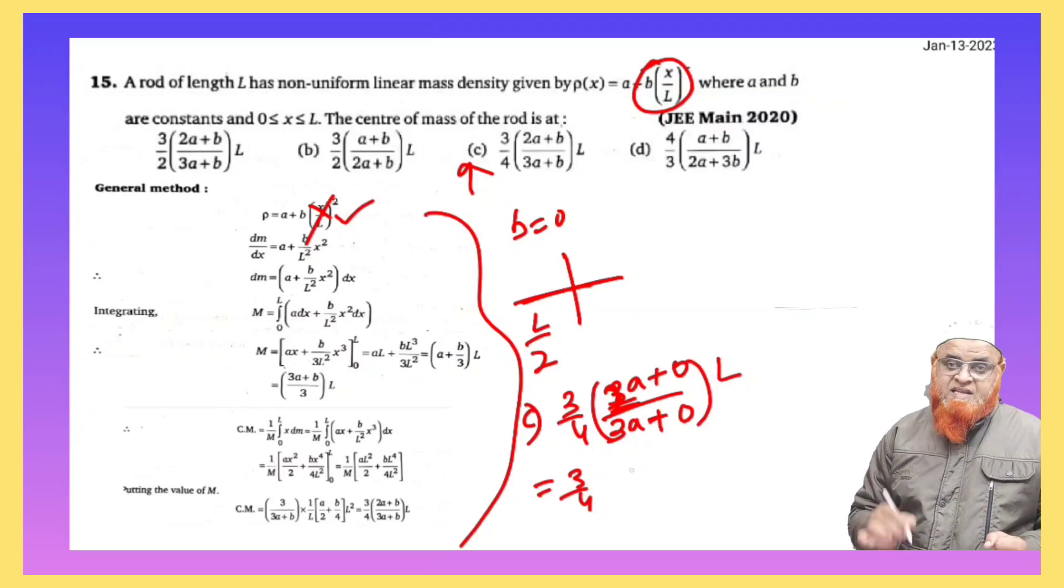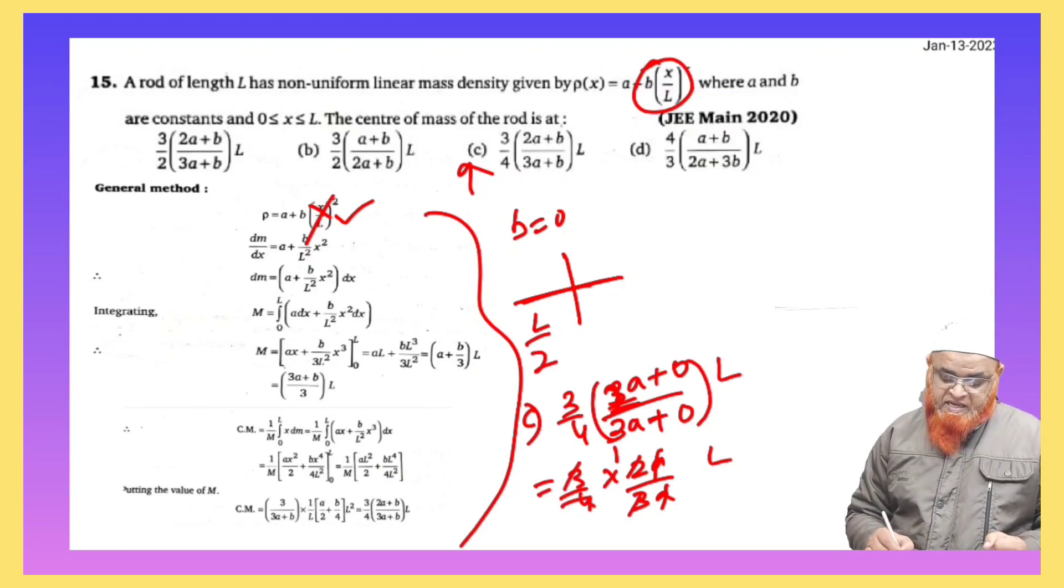So 3 by 4 is written here, and in the numerator it is 2A by 3A. A gets cancelled, L is left here, and 3 gets cancelled. So what is going to be left here is L by 2.